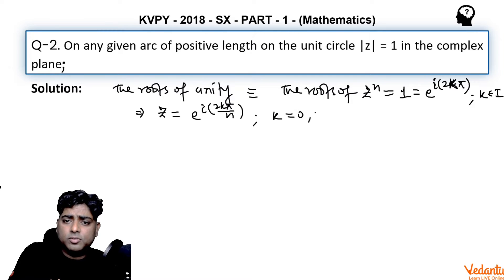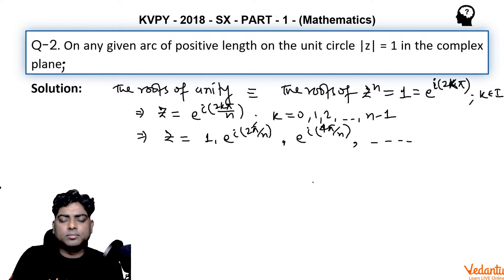So finally the roots of unity means z is equal to e raise power iota 2k pi by n, where generally k is taken from 0 to n minus 1. Finally z is basically 1, e raise power iota 2k pi by n, e raise power iota 4k pi by n, and so on. These are the roots of unity.